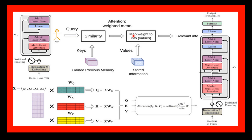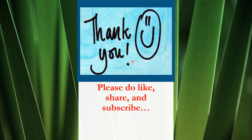Self-attention allows the transformer to focus on a person's income in a particular year or to compare income across different years. In addition to self-attention, the transformer uses a multi-headed attention layer, which allows it to simultaneously consider multiple aspects of the input sequence, such as the overall trend in income or the specific values of income in different years. The transformer uses self-attention and multi-headed attention to process the sequence of income data and make predictions about income tax, efficiently attending to different parts of the input in a flexible way. Thank you.